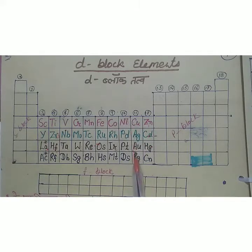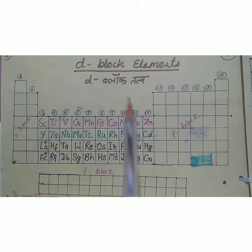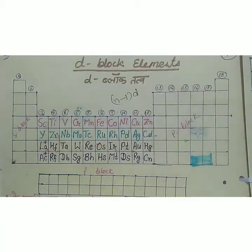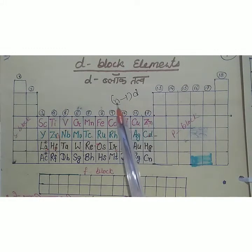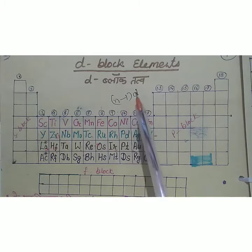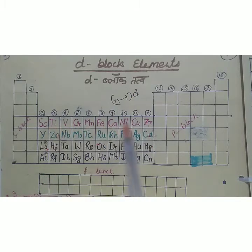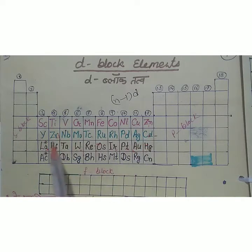The elements of the d block are known as d block elements. The f block consists of groups 14 and 15. D block elements are those in which the last electron enters the (n-1)d subshell. The d block series run from scandium to zinc, yttrium to cadmium, lanthanum to mercury, and actinium to copernicium.